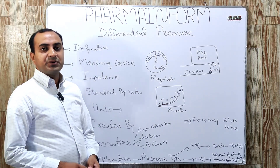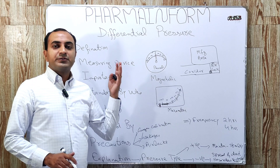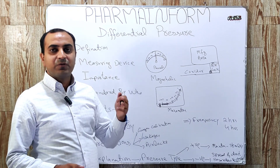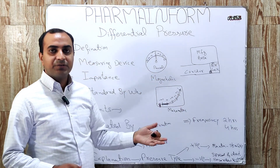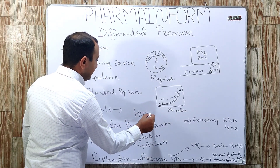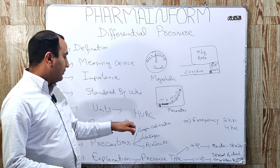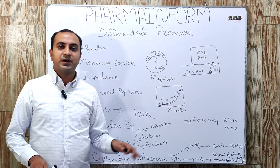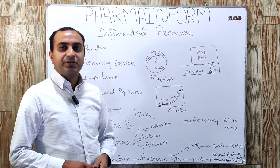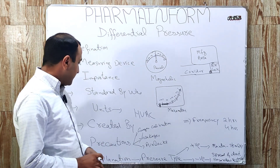How is differential pressure created? Differential pressure is important in clean rooms where we manufacture and dispense our drugs. This pressure is created by the HVAC — heating, ventilation and air conditioning system. If you are not familiar with HVAC, the link to the playlist regarding heating, ventilation and air conditioning system is given in the description. You can watch the playlist to understand the complete working and principle of HVAC.